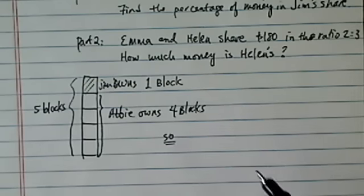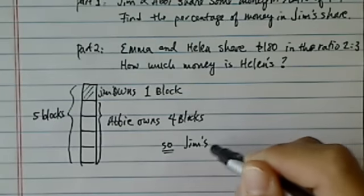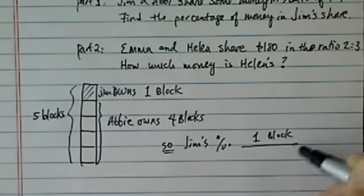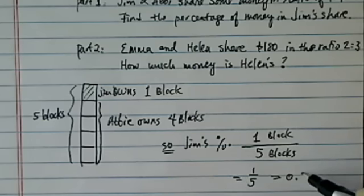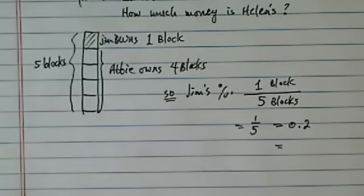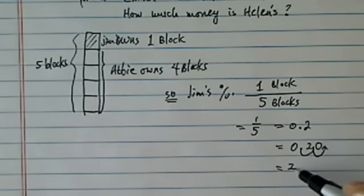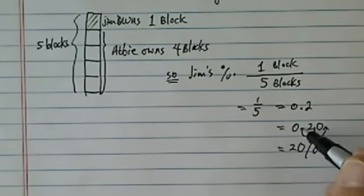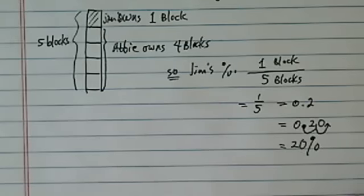We're asked to find the percentage of Jim's holding. So Jim's percentage of holding is he owns 1 block out of 5 blocks, which is 1 over 5, or 0.2. And then when you change 0.2 to percent, 0.2 becomes 20 out of 100. That's how we do the first problem.